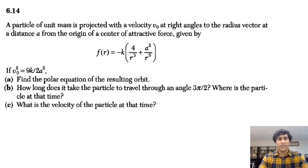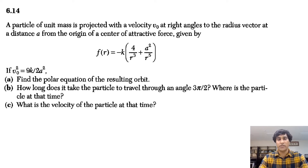It is given that V₀² = 9K / (2A²). We have to find: Part A — the polar equation of the resulting orbit; Part B — how long it takes the particle to travel through an angle 3π/2, where the particle is at that time, and what is the velocity of the particle at that time.